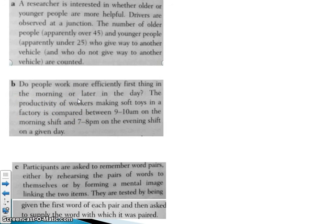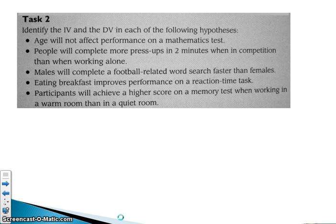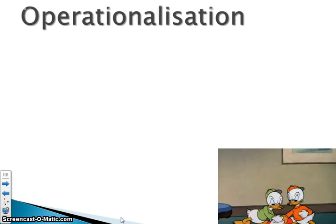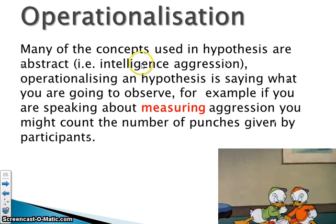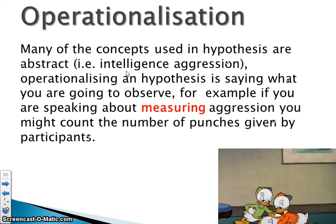What we could say instead is the number of toys made. Another way to measure it would be to observe workers and measure the amount of time they spend staring into space. We could also measure memory by recording the number of answers they got right, or by counting the number of times they guessed wrong — two different ways of measuring memory that might give different results. Exactly what we measure, or how we measure it, will affect the results, so we have to decide on our measure and be prepared to defend it.